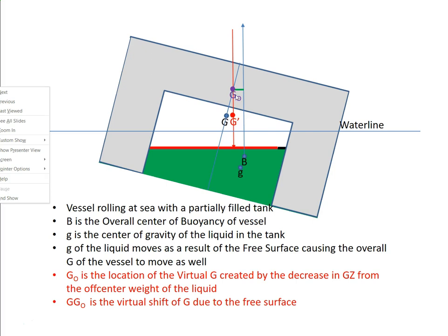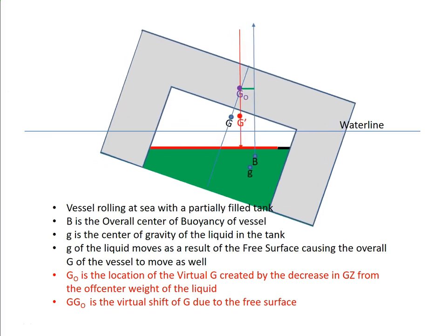The only thing being added into this slide is this — the virtual center of gravity. Where is the center of gravity of this vessel right now? At this moment, the center of gravity is here — it's been shifted transversely. That's where it would have been if this tank had been full or empty. But since the tank is slack, little g has moved over and big G has moved over as well. This spot right here is actually where the center of gravity of this vessel is right now.